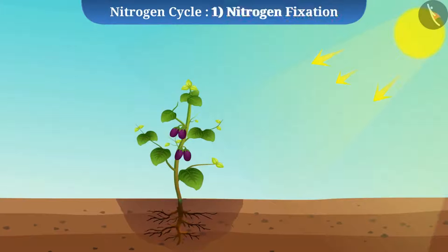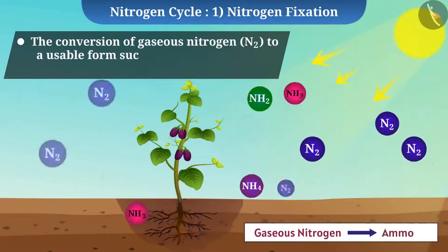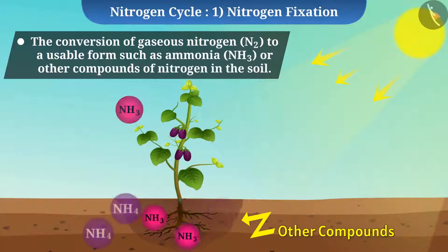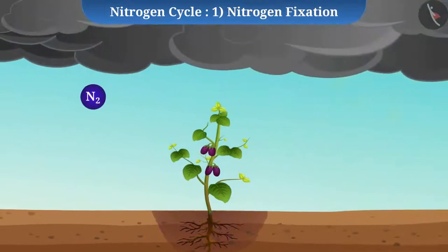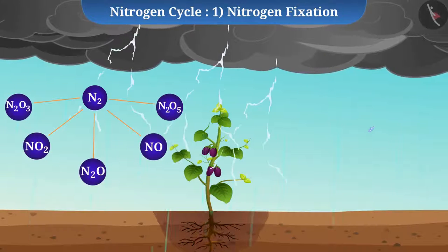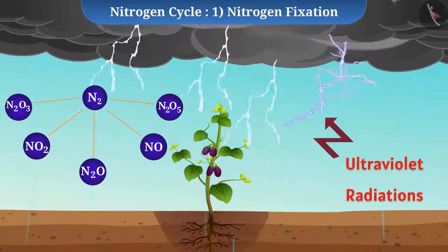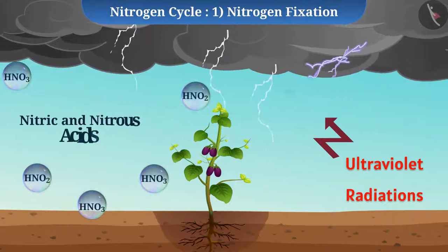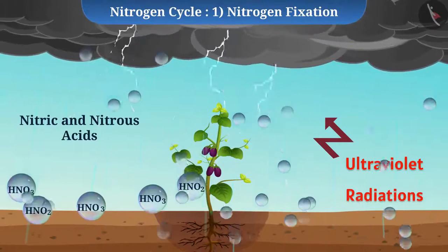Nitrogen fixation is the conversion of gaseous nitrogen to a usable form such as ammonia or other compounds of nitrogen in the soil, so that plants can use them. In the atmosphere, nitrogen gas is converted to oxides of nitrogen with the help of energy generated during lightning and by using energy from ultraviolet radiations. These oxides dissolve in water to give nitric and nitrous acids, which fall on land along with rain and become readily available for use by plants.